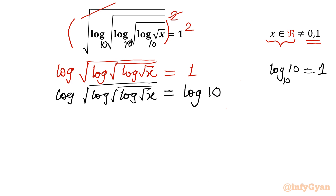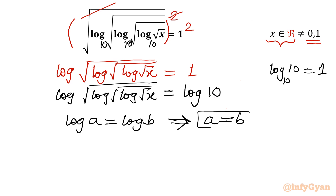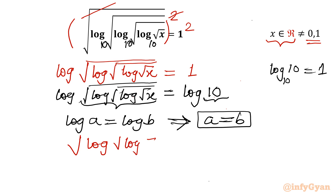Now I will write one property: if log a equals log b, then the conclusion is a should be equal to b. So in LHS this is a, in RHS this is b. So I will write from here a equal to b. So let us write: square root log, square root log, root x equals 10.